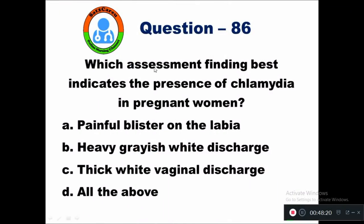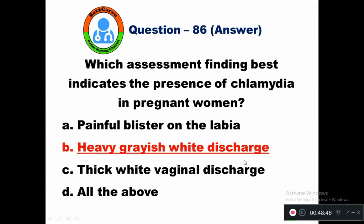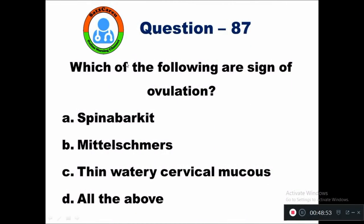Question 86: Which assessment finding best indicates the presence of chlamydia in pregnant women? Option A painful blister on the labia, B heavy grayish-white discharge, C thick white vaginal discharge, D all the above. The right answer is heavy grayish-white discharge from the vagina.